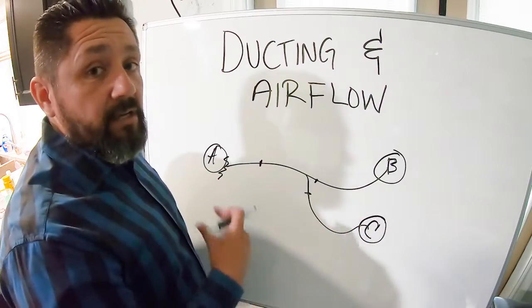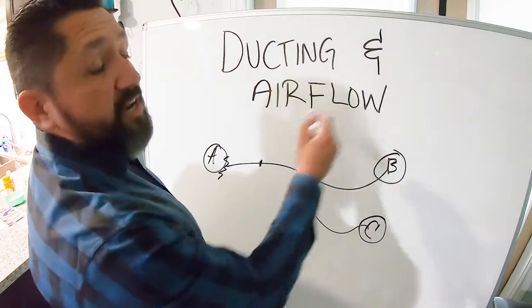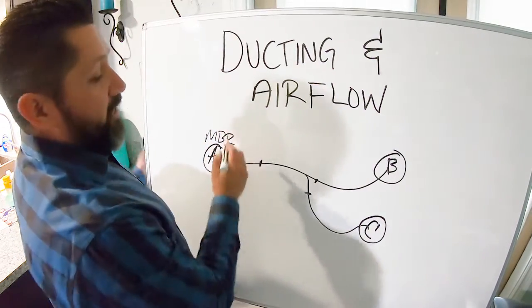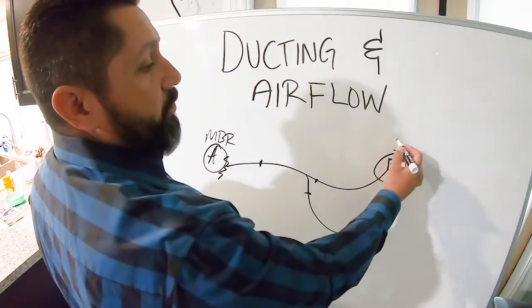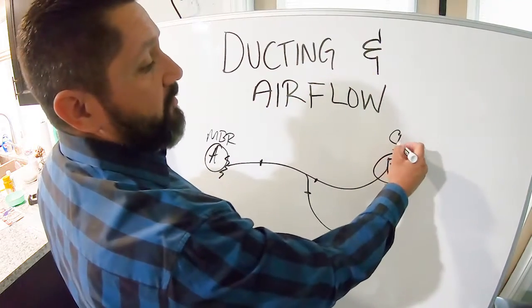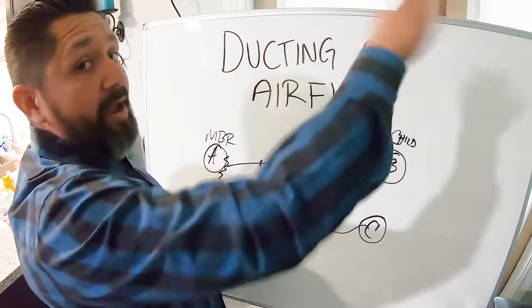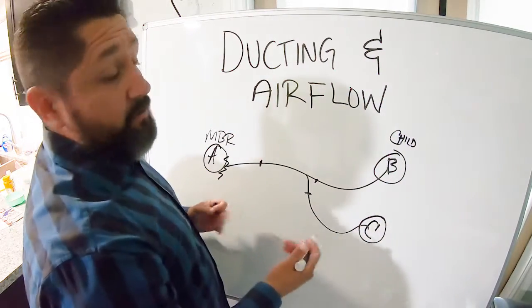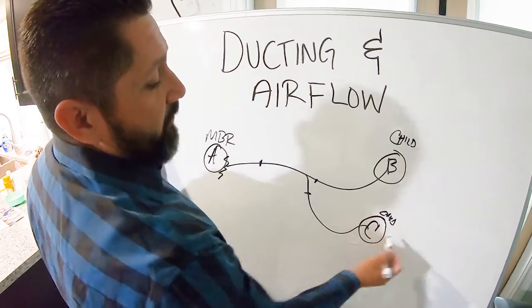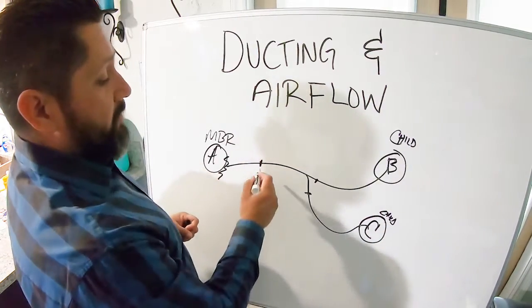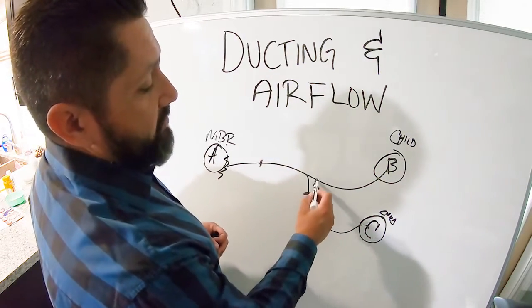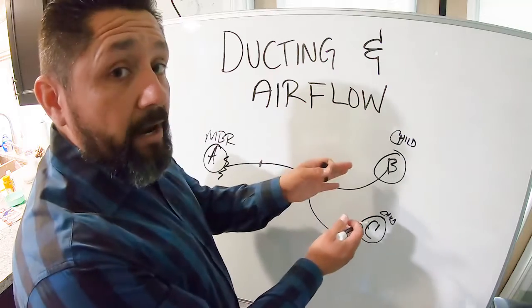It's the same thing with ducting inside of a house. If this is your master bedroom and you're getting a ton of airflow, but then you got your child's room that doesn't get great airflow because it's way over to the other end of the house, and then you got another child's room that gets okay airflow, I have to apply that same principle. I have to put a damper here, this damper here, this damper here to move the air where I need it to go.